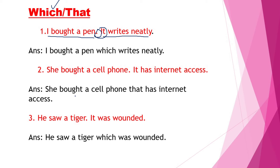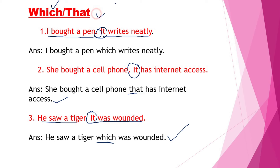Next: 'She bought a cell phone. It has internet access.' Right answer: 'She bought a cell phone that has internet access.' Instead of 'it' and the full stop, we insert 'that'. Next: 'He saw a tiger. It was wounded.' Answer: 'He saw a tiger which was wounded.' Round off the second subject 'it' and use 'which was wounded'. You can practice more and more and get full marks on this topic. Thank you.